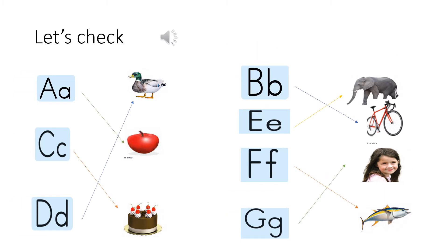Let's check. A - Apple. C - Cake. D - Duck. B - Bike. E - Elephant. F - Fish. G - Girl.